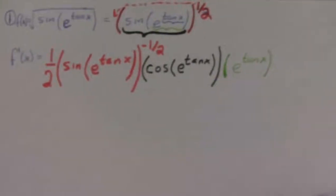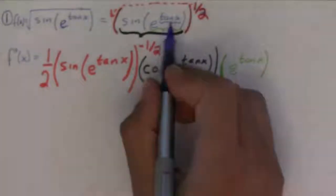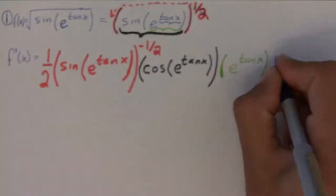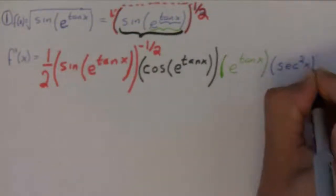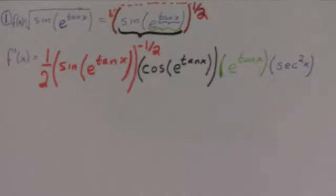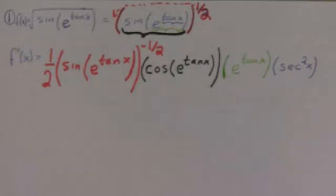And at last, you have the derivative of tangent. Which is secant squared x. And that's it. You just open up all the Russian dolls.